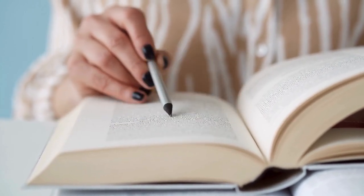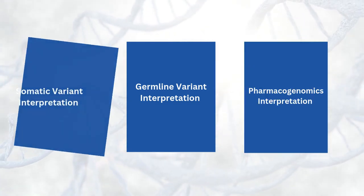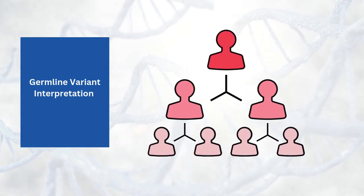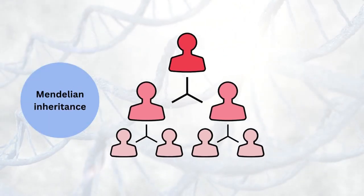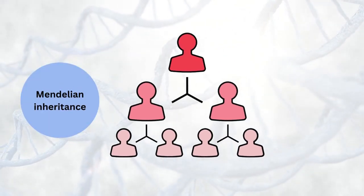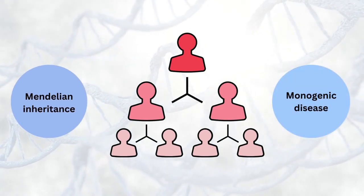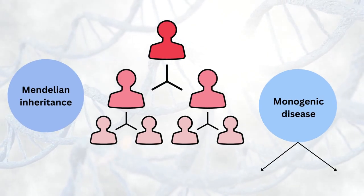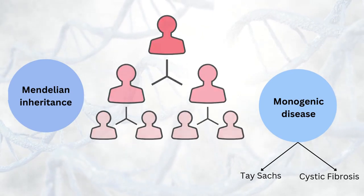Moving on, there are multiple kinds of variant interpretation. We will focus on germline variants, which occur in the gametes and are inheritable. Specifically, we will focus on germline variants inherited in Mendelian fashion and associated with monogenic diseases. Examples of commonly known diseases that originate from germline variants include Tay-Sachs disease and cystic fibrosis.